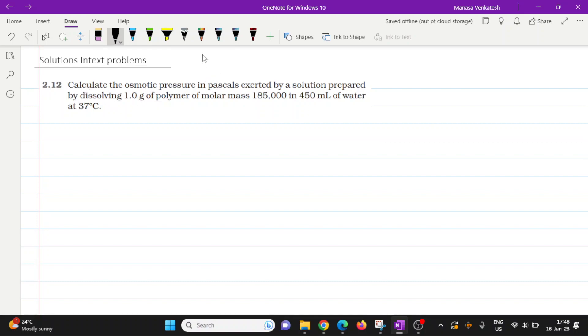Calculate the osmotic pressure in pascals exerted by a solution prepared by dissolving 1 gram of polymer of molar mass 185,000 in 450 ml of water at 37 degrees Celsius.